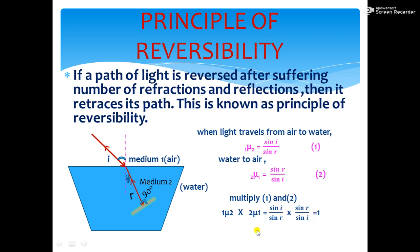From this equation, we can write mu 2 is equal to 1 divided by mu 1 or mu 1 is equal to 1 divided by mu 2. That means, the refractive index of medium 2 is the reciprocal of refractive index of medium 1 or refractive index of medium 1 is the reciprocal of refractive index of medium 2. It is a proof that the path of a light ray is reversible.